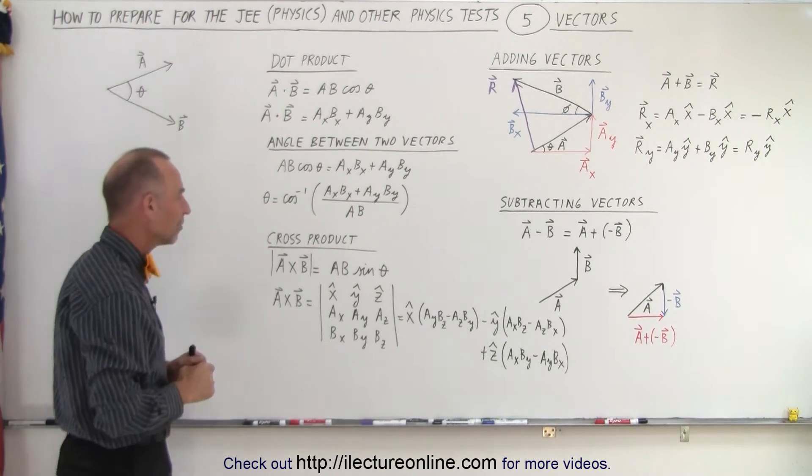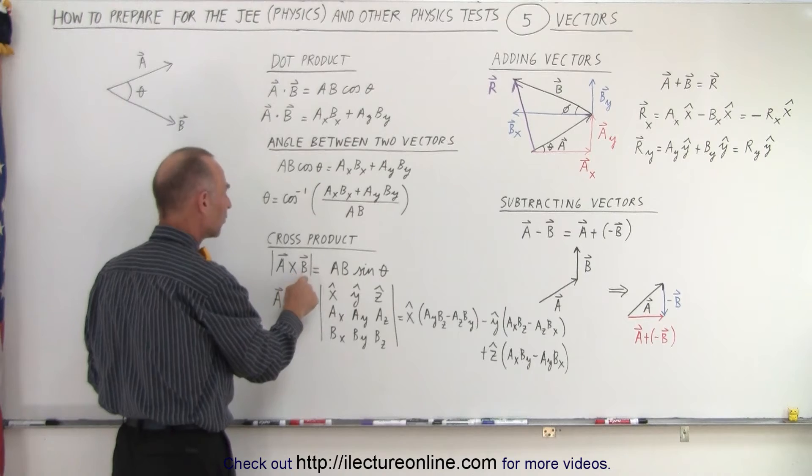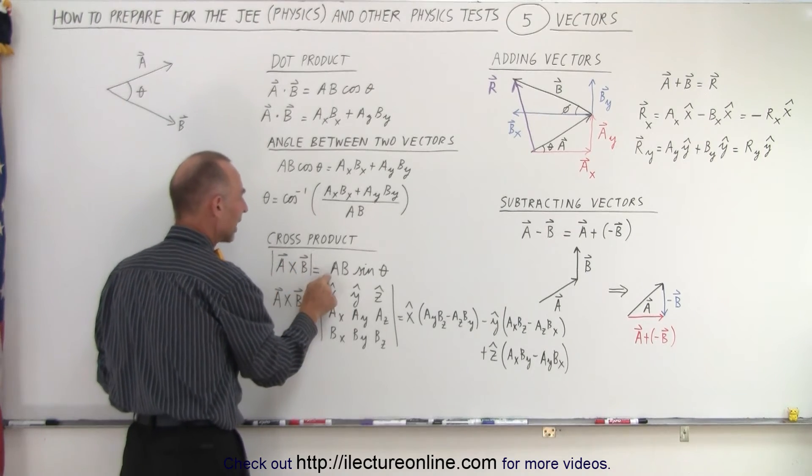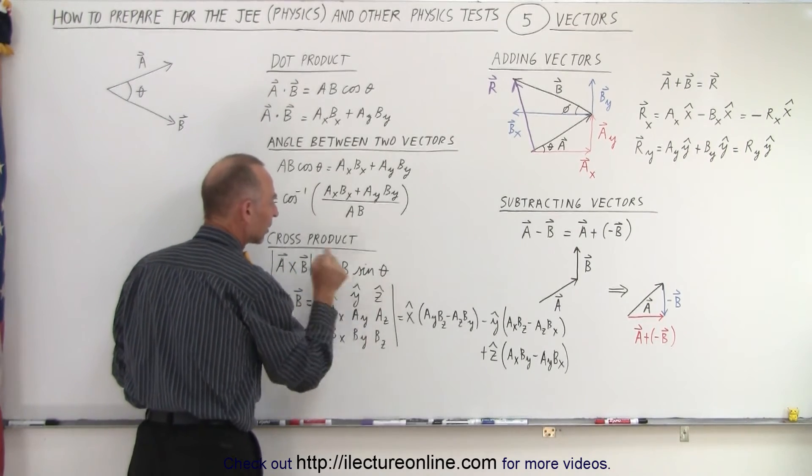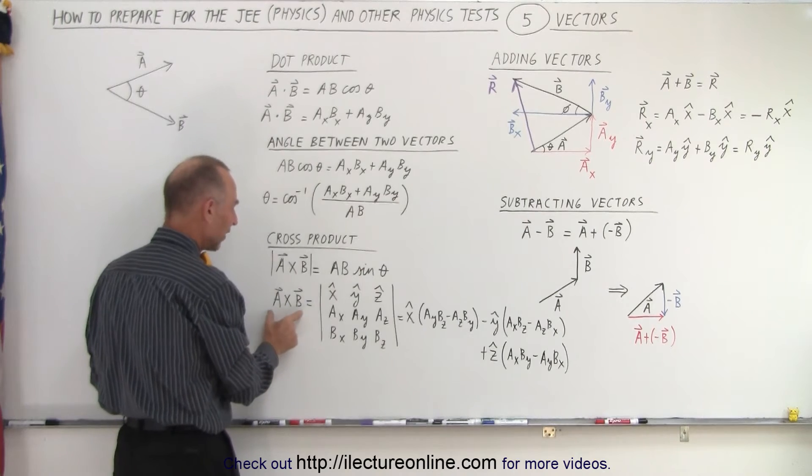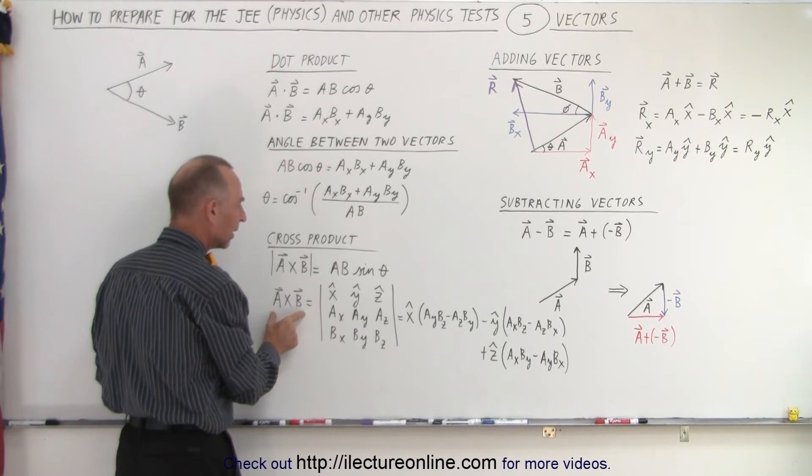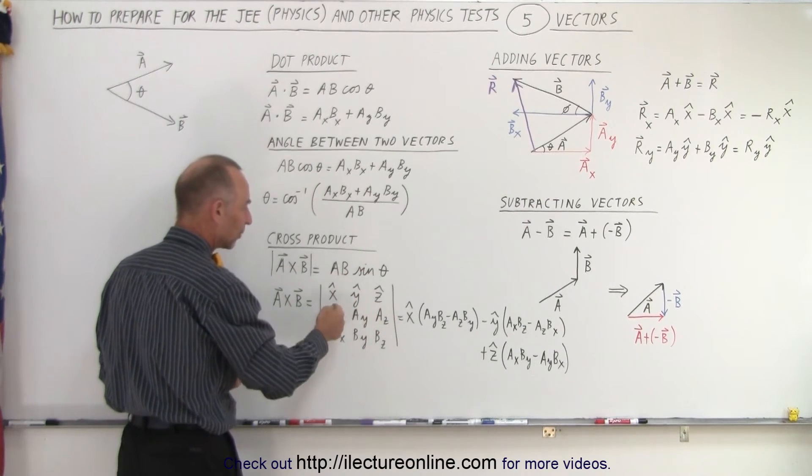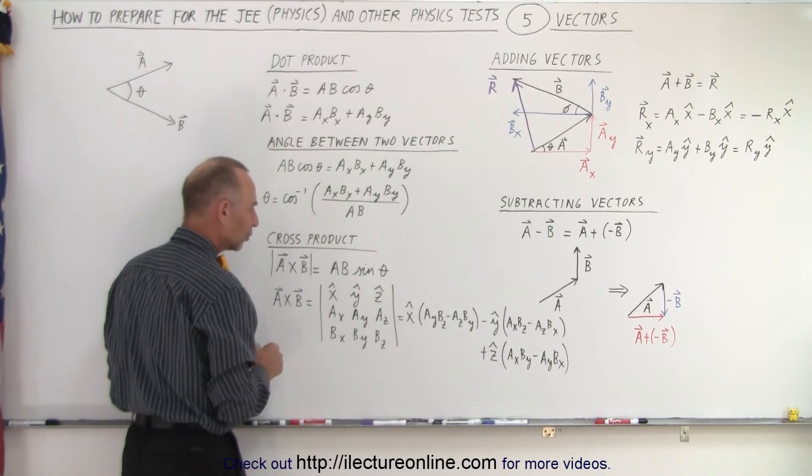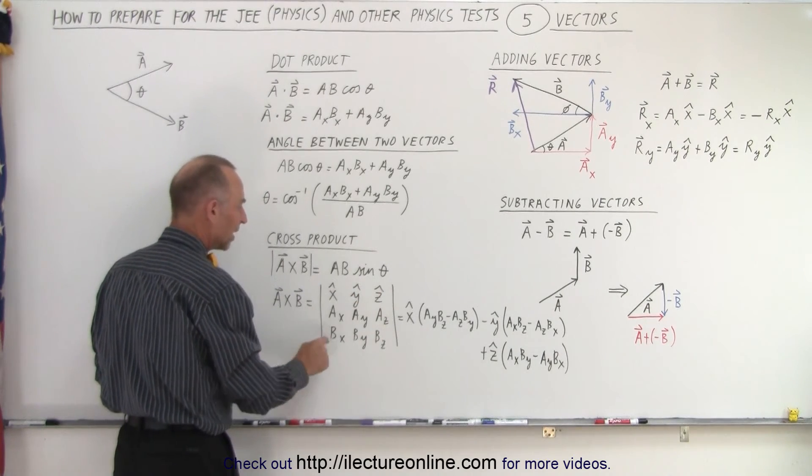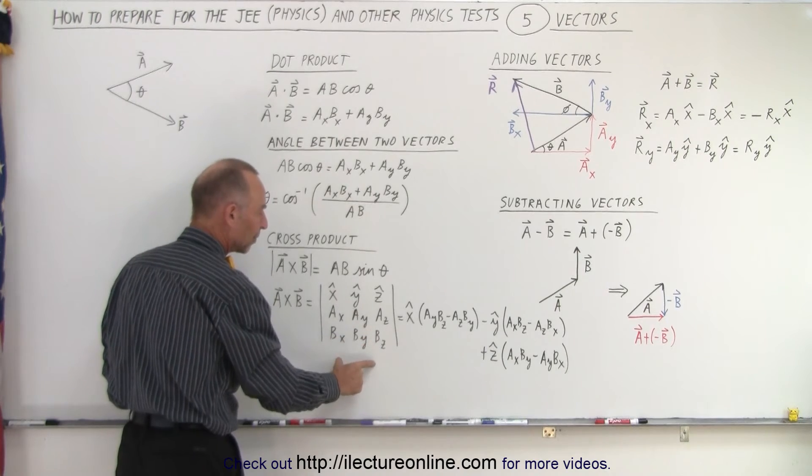And finally, if you're going to do a cross product, A cross B, the magnitude of that is A times B times the sine of the angle between them. Or if you want to find the answer in vector format, then you use this matrix format where you have x, y, and z unit vectors, x, y, and z components of A, x, y, and z components of B.